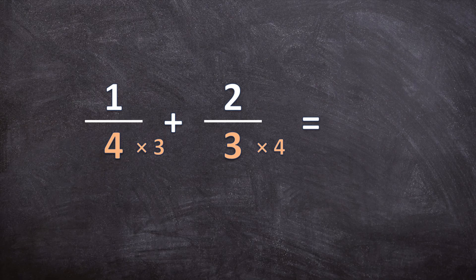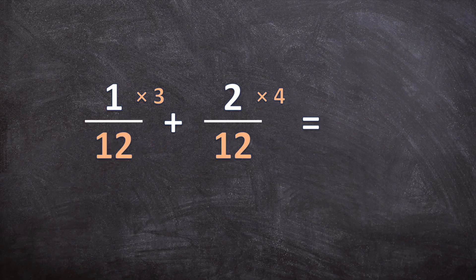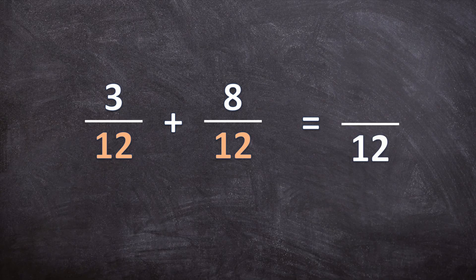For the first fraction, when we multiply the denominator by 3 we also need to multiply the numerator by 3; for the second fraction, when we multiply the denominator by 4 we also multiply the numerator by 4. So both denominators become 12. For the first numerator: 1 times 3 is 3. For the second numerator: 2 times 4 is 8. Adding the numerators: 3 plus 8 is 11. We cannot simplify 11 over 12, so this is our final answer.